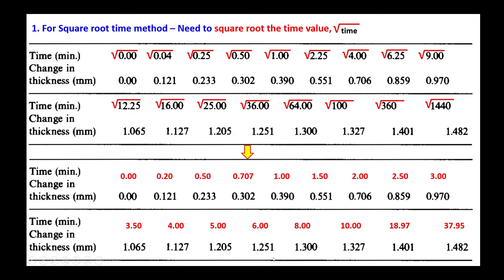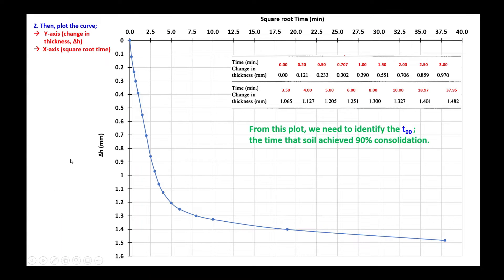To plot the data, prepare graph paper with the y-axis as the change in thickness and the x-axis as the square root time value. The minimum x-value is 0 and the maximum is 37.95, so prepare a suitable scale. The change in thickness starts at 0.00 and ends at a final value of 1.482 mm. Once all points are plotted, this is how the pattern of the plot looks.